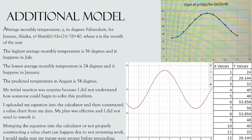My initial reaction was surprise because I did not understand how to begin solving this problem. As I uploaded my equation to the calculator and constructed a value chart from my data, my plan was effective and I did not need to rework it. Mistyping the equation or not properly constructing a value chart can happen due to not reviewing your work, so I made sure my inputs were correct before proceeding. Here I display two charts of the equation: the bottom chart shows the sinusoid equation and the top chart shows the exact values — x values 1 through 12 and their corresponding y values.